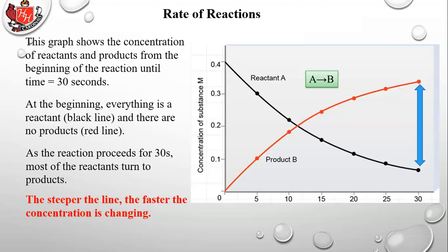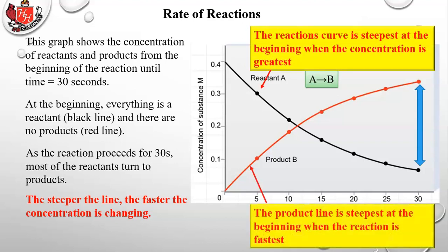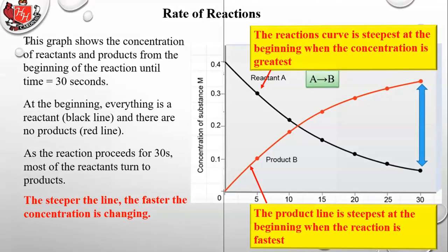The reactant curve is steepest at the beginning when the concentration is greatest, and the product line is steepest at the beginning when the reaction is fastest.